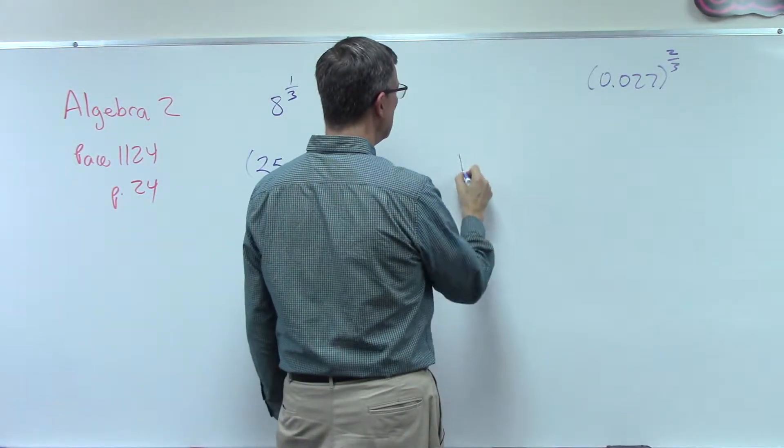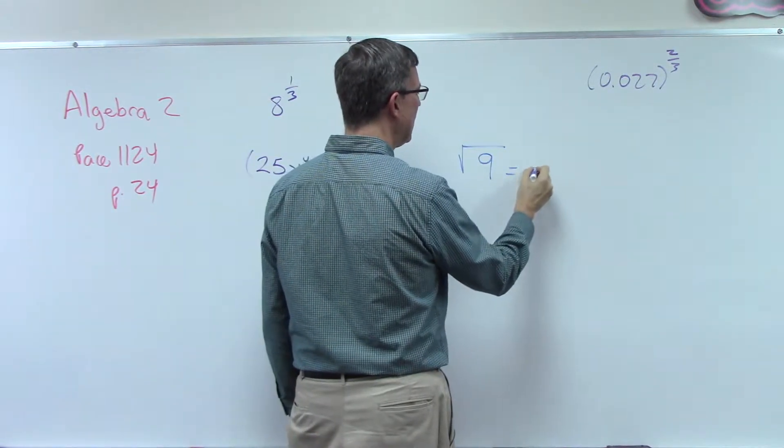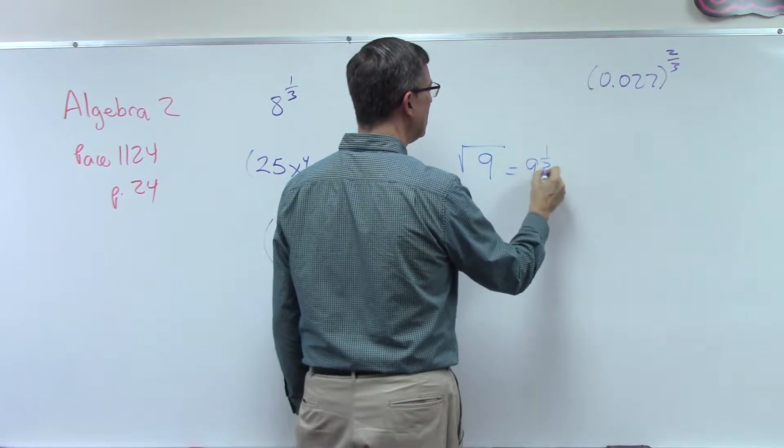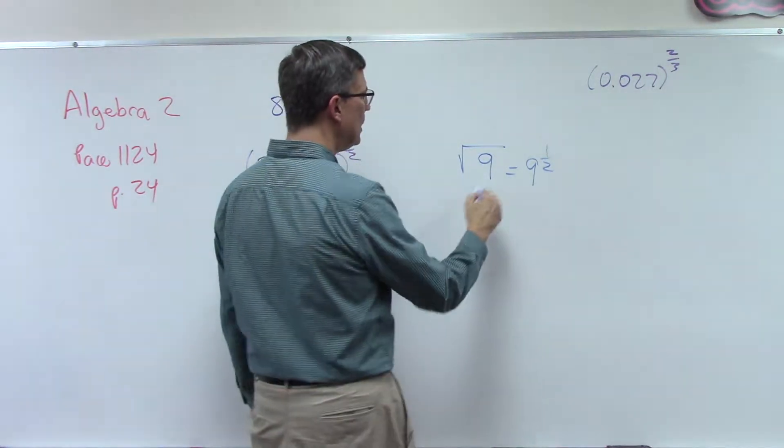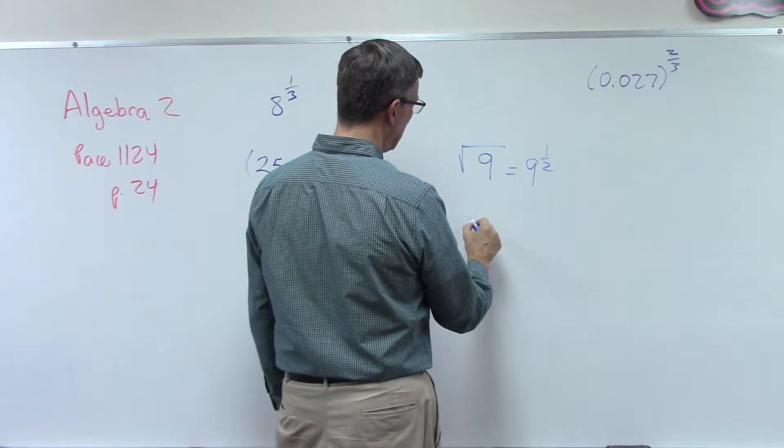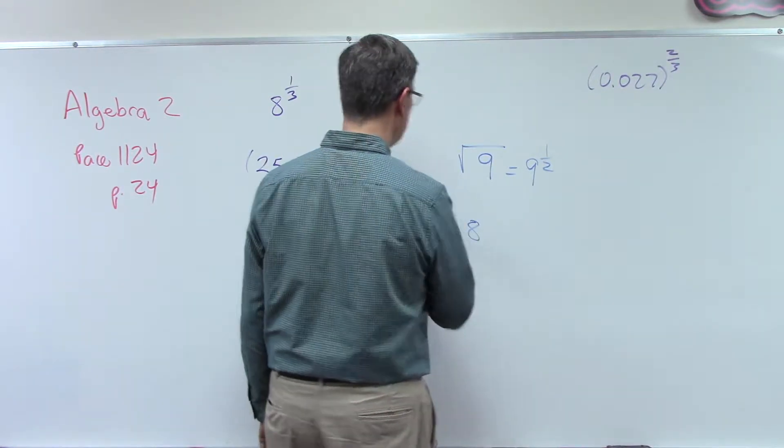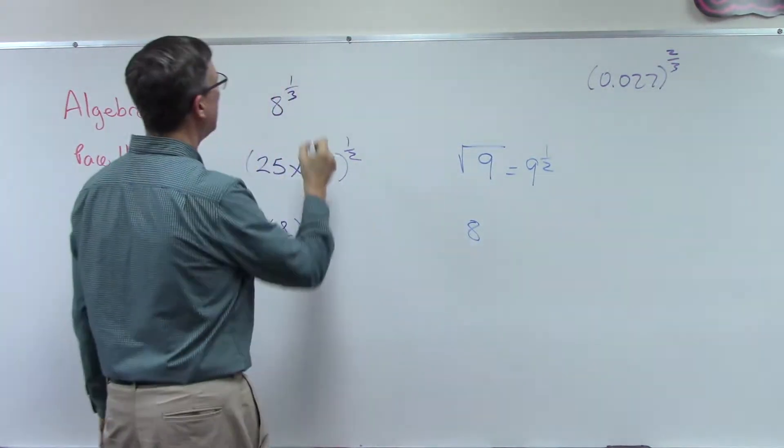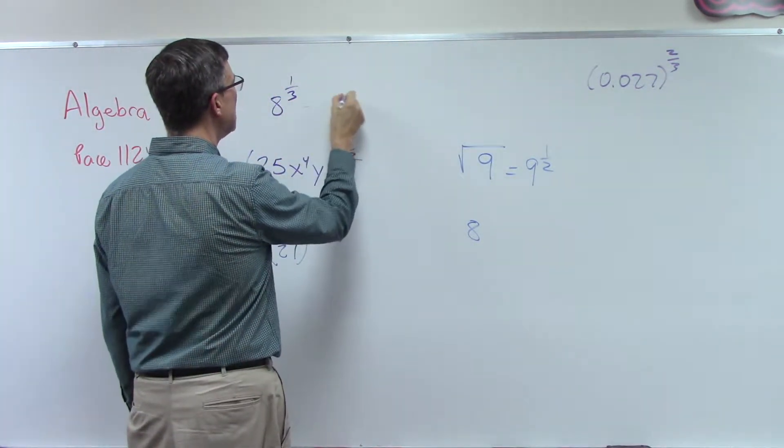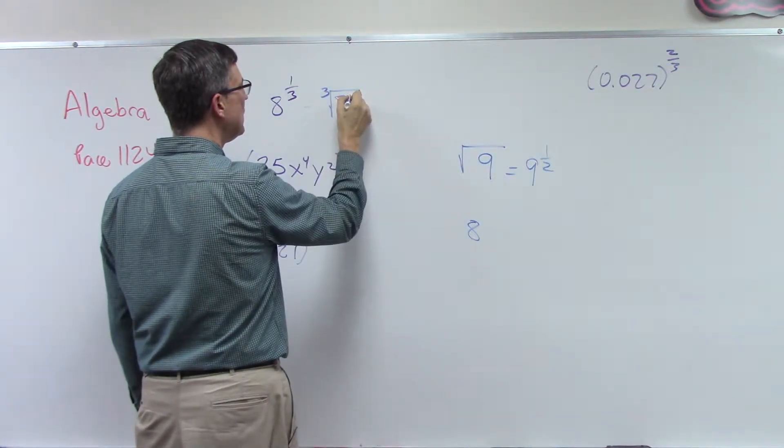Let's say I have the square root of 9. That actually is the same thing as writing 1/2 as the exponent on 9. Or if I had 8 to the 1/3 power, that would be the same as 8 with an index of 3 and an exponent in here of 1, so 1 over 3, which is 1/3.